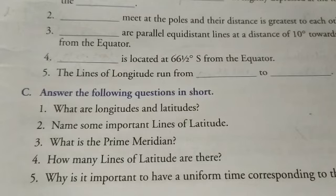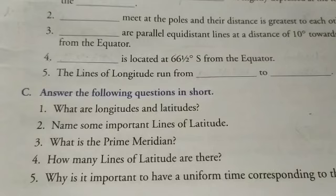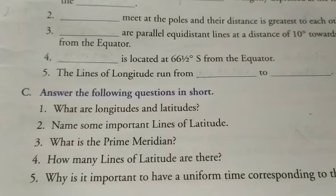Again repeating the answer: The Prime Meridian is the standard line of longitude assumed to be crossing the Royal Observatory in Greenwich. This line divides the world into two equal halves, the Eastern Hemisphere and the Western Hemisphere.